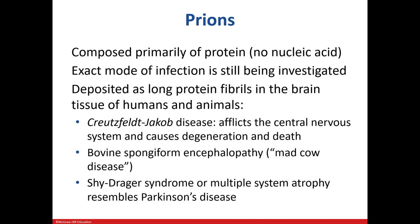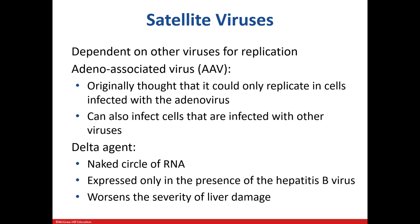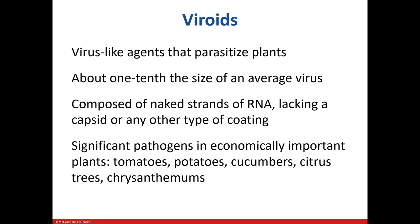Let's look at non-cellular infectious agents other than viruses. Prions are solely made up of protein. A lot of research is still being done on these. They tend to deposit themselves in brain tissue and are associated with things like Creutzfeldt-Jakob disease, which causes damage to the nervous system and death. They also cause mad cow disease and Scrapie syndrome. Satellite viruses rely on other viruses — the adeno-associated virus was once only thought to replicate in the presence of adenovirus, but that's no longer the case. The delta agent only expresses itself if hepatitis B is around and can exacerbate damage to the liver. Viroids target plants like tomatoes, cucumbers, and citrus, and are only made up of RNA.